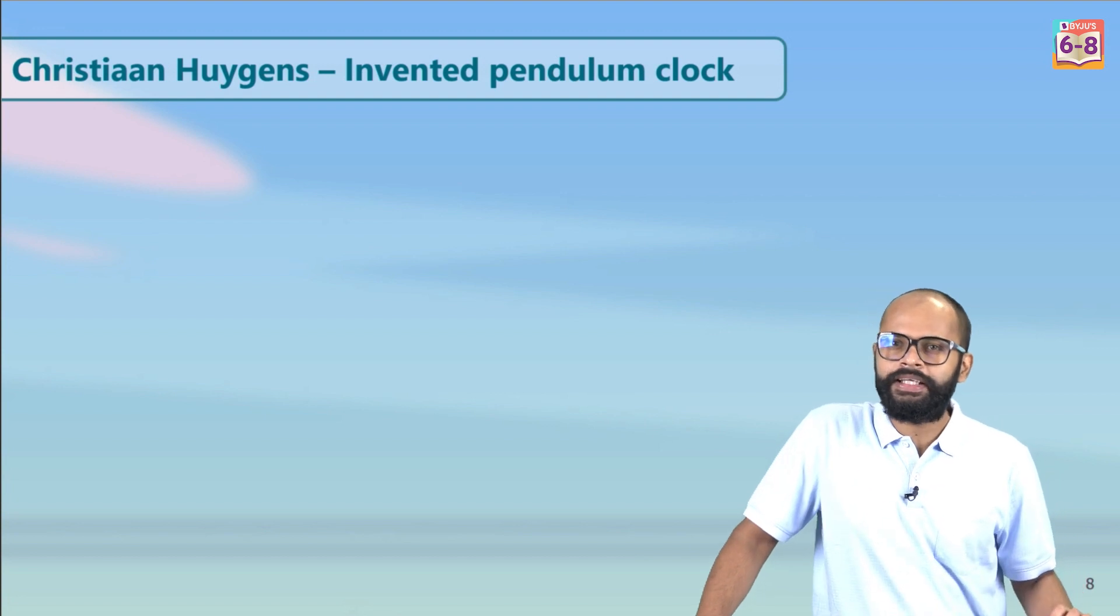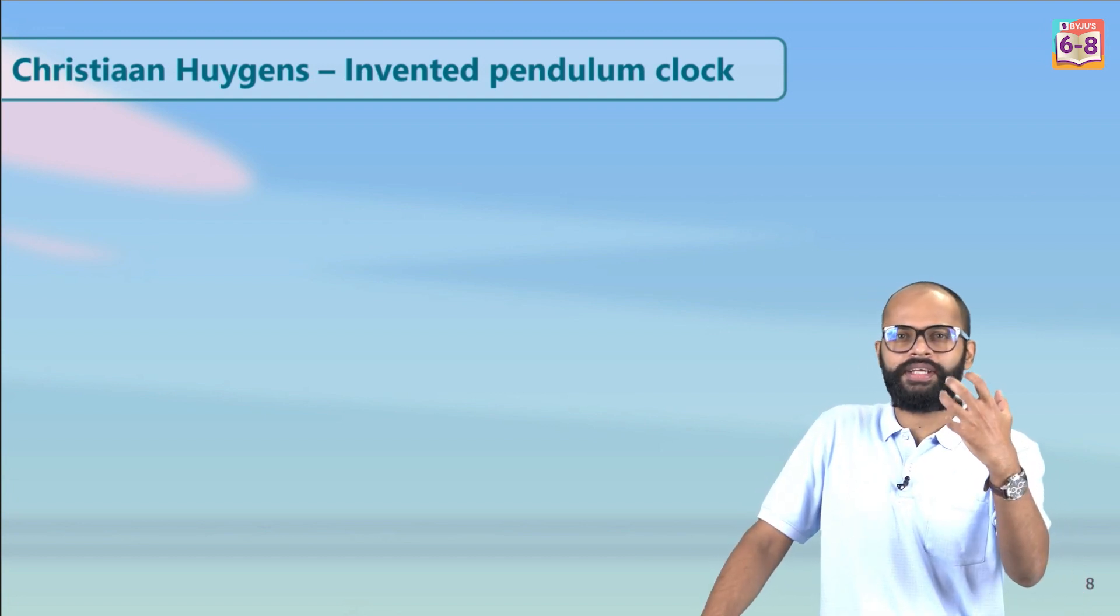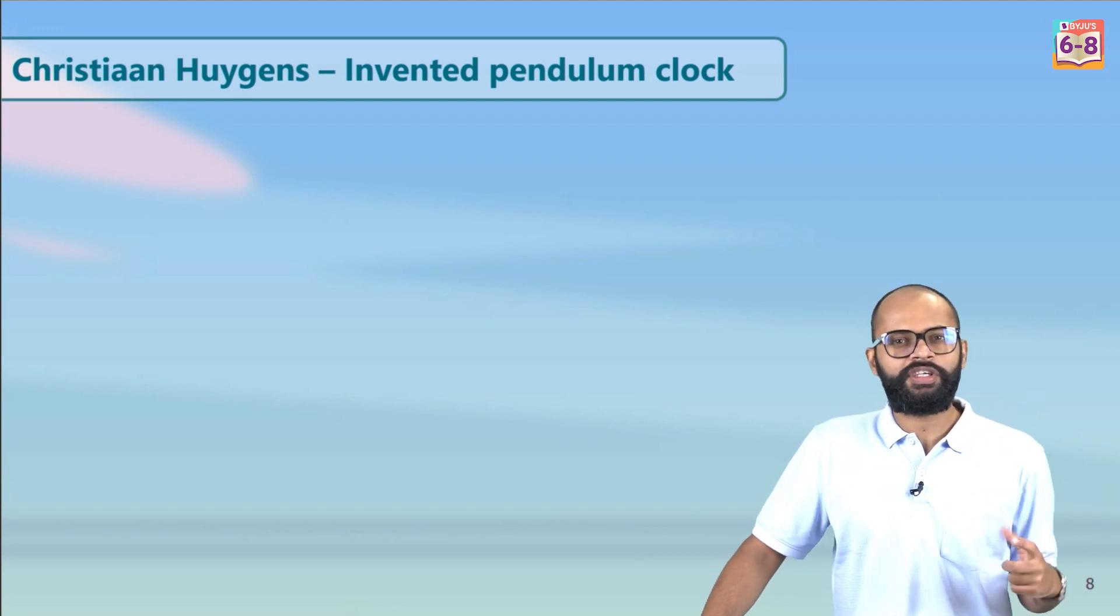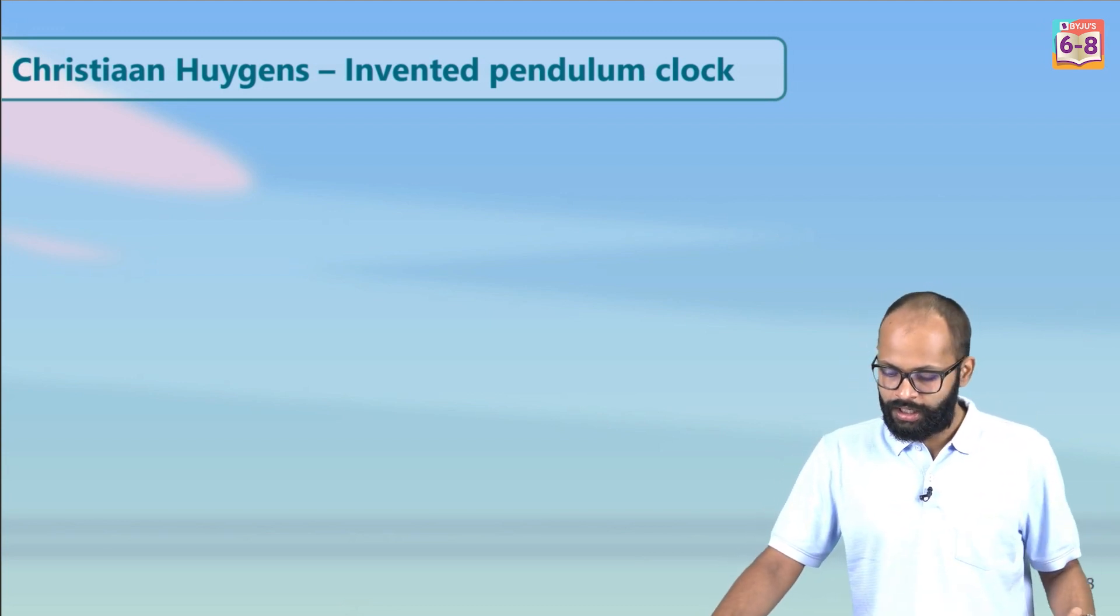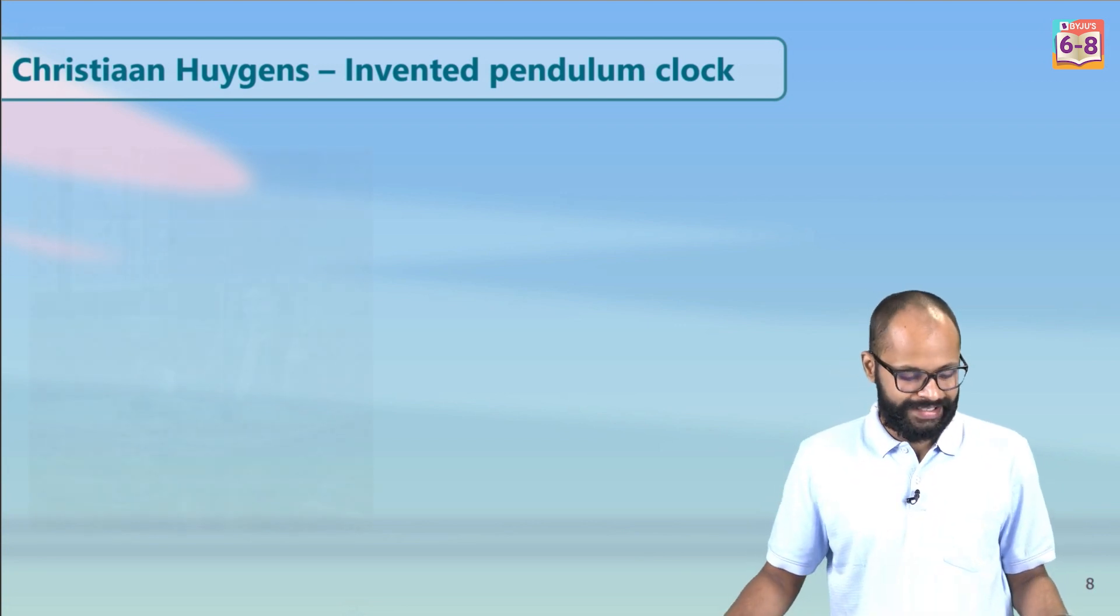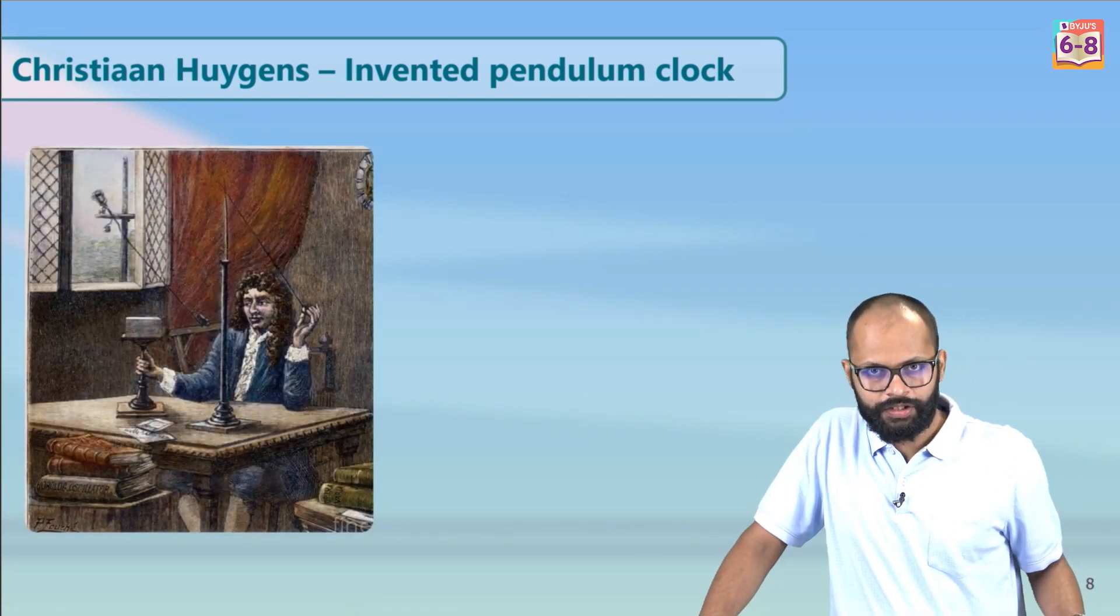All right, nice. Now you know what, although Galileo Galilei started wondering or started exploring this timekeeping method or using pendulums, it was Christian Huygens who came up with the concept of pendulum clocks for the first time. So it was Christian Huygens. We all remember him for one more thing, the Huygens principle in wave optics, right?